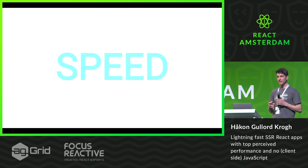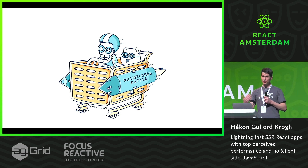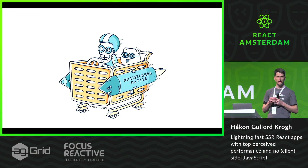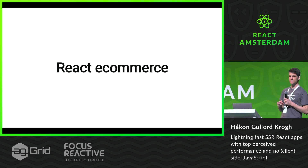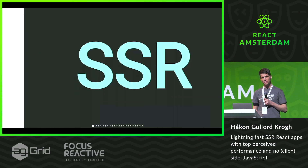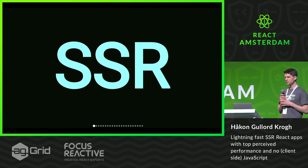Speed is our main passion — so much that we got our illustrator to make something for it. We're a fast headless PIM, and our typical client is a React eCommerce. So how do you make that fast? Well, you go to Next.js, apply server-side rendering, and you're done. Right? Well, it turns out there's a big downside to SSR, and let's talk about that.